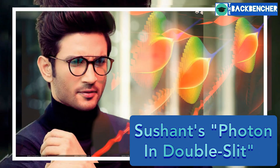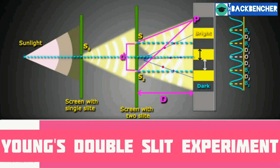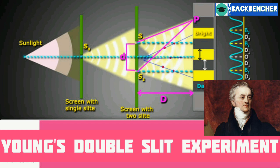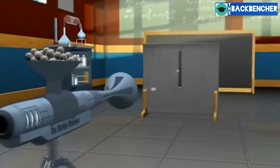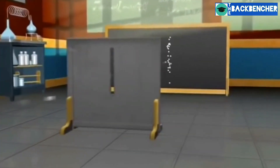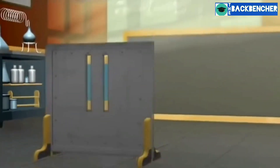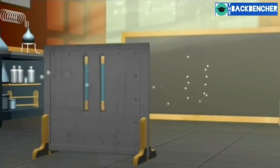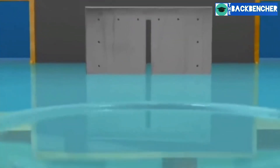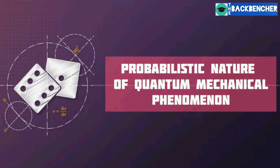We are going to explain this in a simple way as a souvenir of Sushant. This type of experiment was first performed using light by Thomas Young in 1801 as a demonstration of the wave behavior of light. The photon in a double slit is an experiment in which photons or particles of matter like electrons produce a wave pattern when two slits are used. In modern physics, the double slit experiment demonstrates that light and matter can display characteristics of both classically defined waves and particles, showing the fundamentally probabilistic nature of quantum mechanical phenomena.